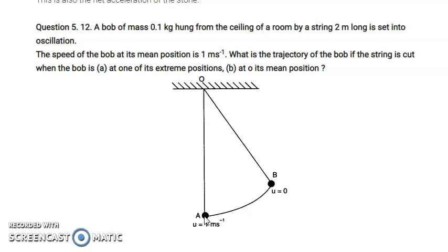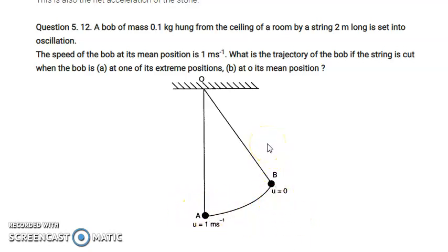At the extreme position, the particle's kinetic energy is zero because the velocity is zero. The potential energy is at its maximum there. After reaching the extreme position, the particle reverses direction and traces back through the oscillation.